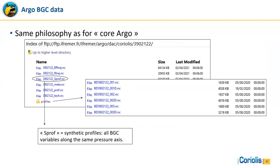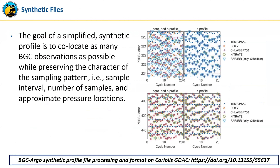For BGC data, the philosophy is the same as for core Argo, except there are two additional files. The B files contain all the information required by the profiled variables as well as the biological information. The SPROF synthetic profile contains all the BGC variables along the same pressure axis. This synthetic file has been designed to facilitate the use of BGC data — the goal is to co-locate as many BGC observations as possible while preserving the character of the sampling pattern, such as sample interval, number of samples, and approximate pressure location. Use these synthetic files for your application; they are much easier to manipulate and use.